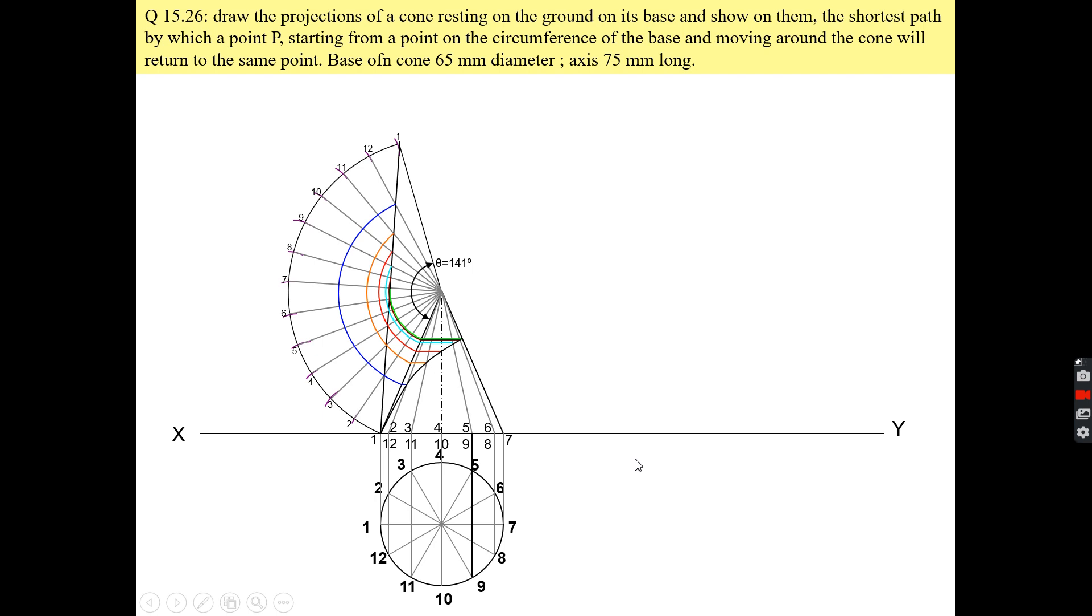When you transfer all these points on the front view, you can also transfer these points in the top view. After transferring all these points, you can join these points with the help of a smooth curve. Remember one point here that you are not cutting a section.